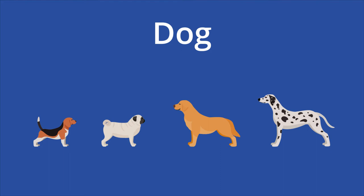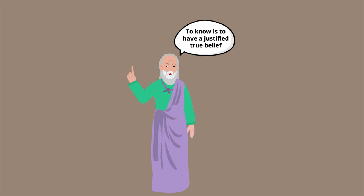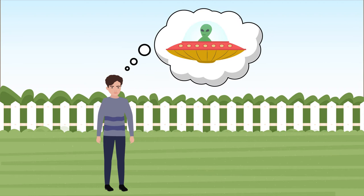Being a beagle is sufficient condition of being a dog, and so is being a pug, or golden retriever, or a Dalmatian. Ancient Greek philosopher Plato was the first to propose the classical analysis of knowledge, which defines knowledge as a justified true belief. This is known as the JTB theory of knowledge.